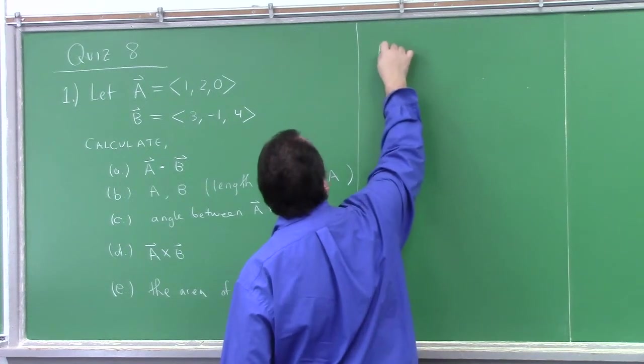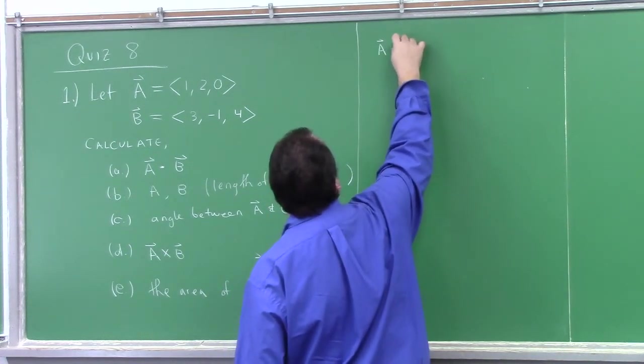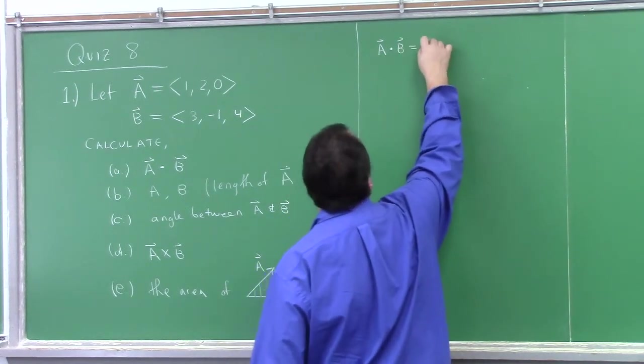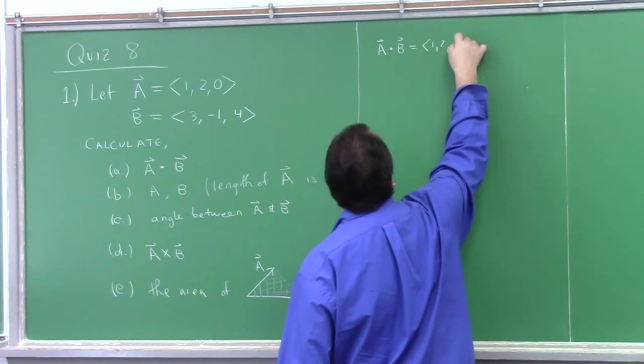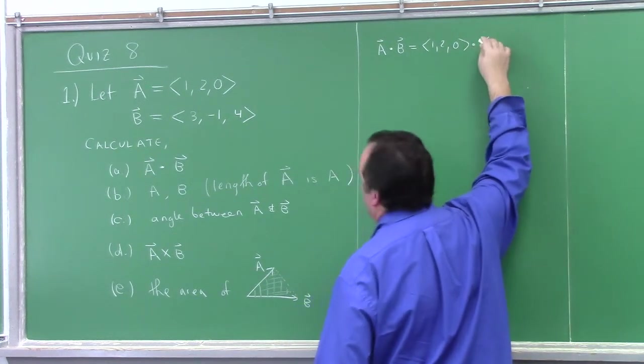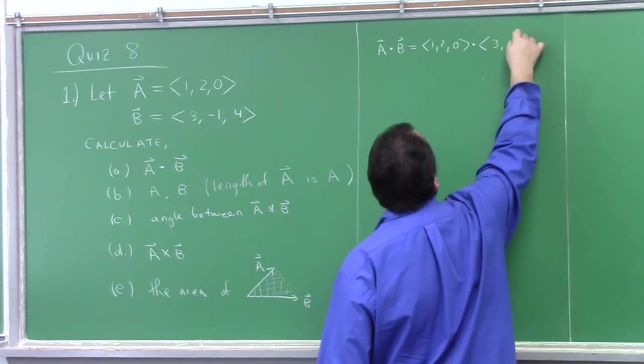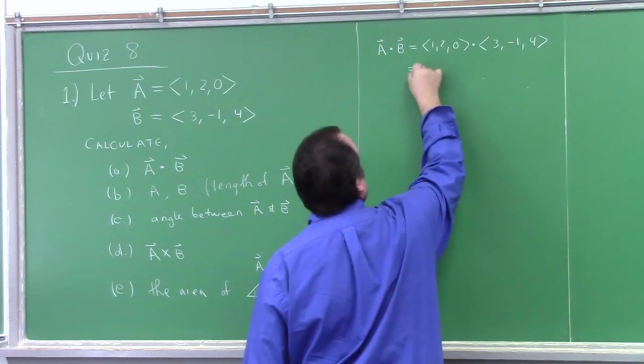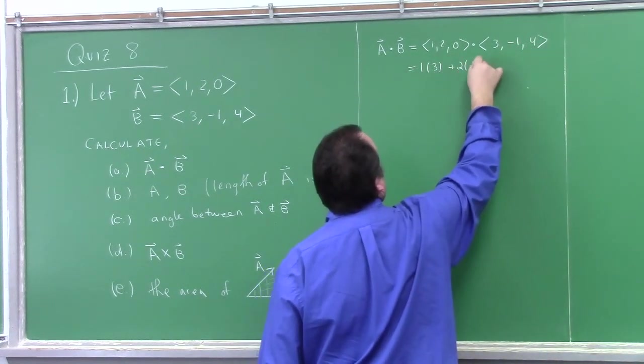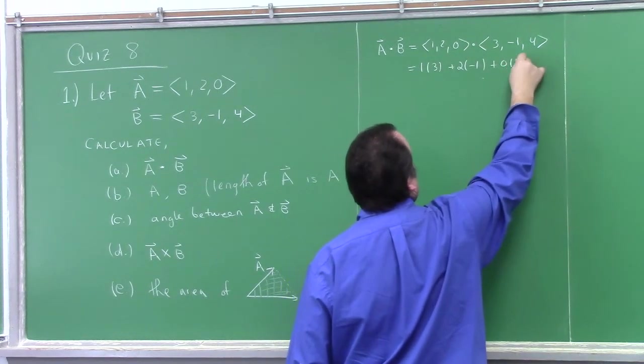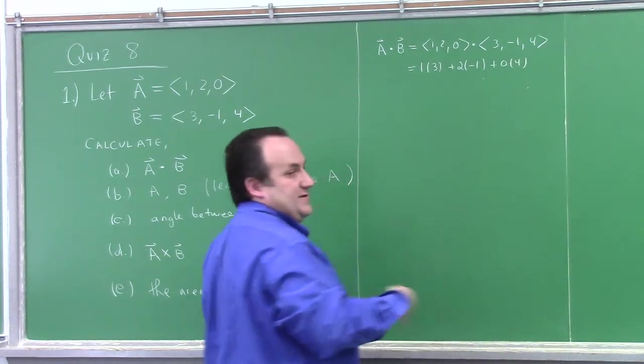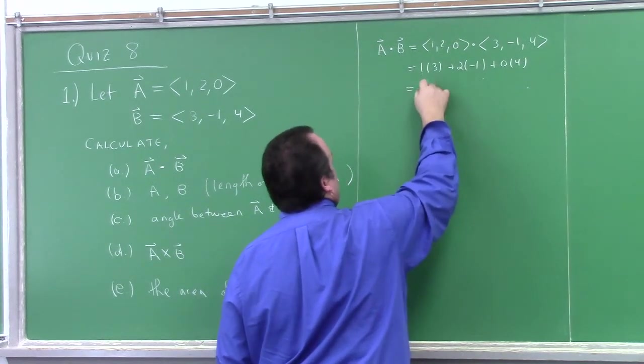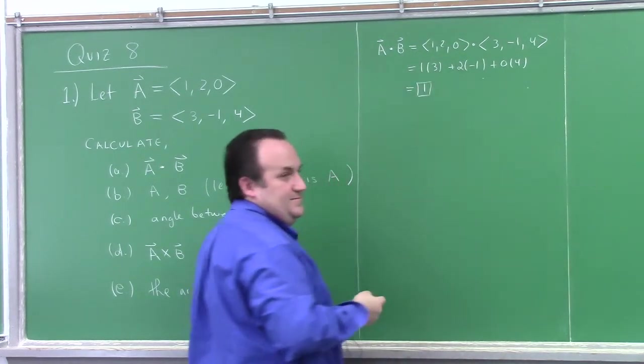Okay, so a dot b is, it's helpful to write the vectors again here. So 1, 2, 0, dotted with 3, minus 1, 4. Okay, so that is 1 times 3, plus 2 times minus 1, plus 0 times 4. And that's just the definition of dot product. So you guys got that? Of 1. Yeah, that is 1. You were supposed to add the numbers together.